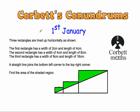In this video we're going to look at the Corpus Conundrum's 1st of January question. It says three rectangles are lined up horizontally as shown. The first rectangle has a width of 2cm and length of 4cm. The second rectangle has a width of 4cm and length of 8cm. And the third rectangle has a width of 8cm and length of 16cm.